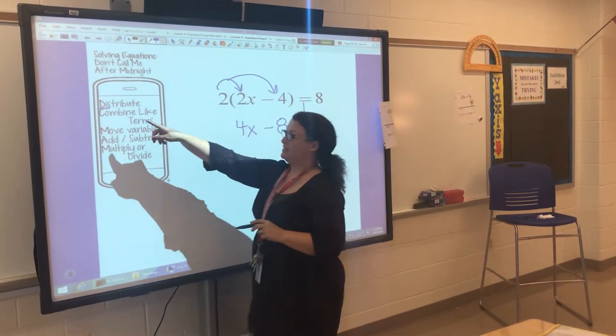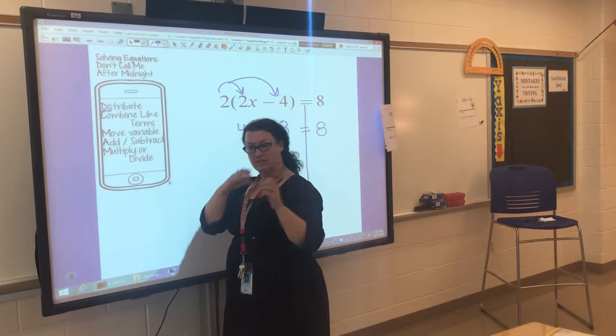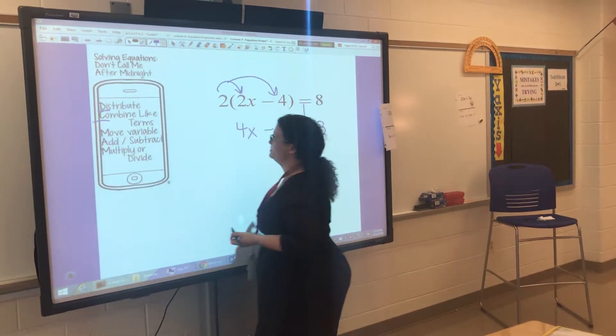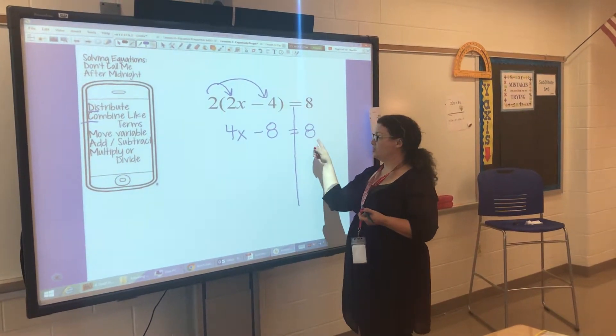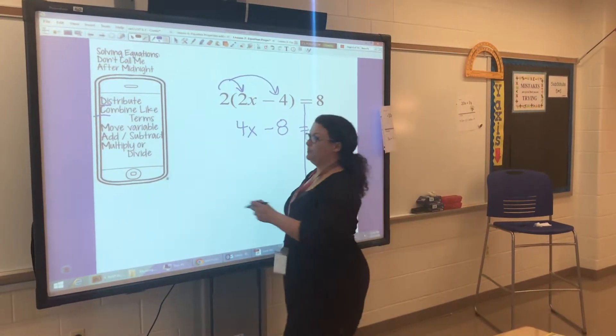The next step is combine like terms. The C stands for combine like terms. On the left-hand side, there's nothing alike, so there's nothing to combine. On the right-hand side, that stays put.